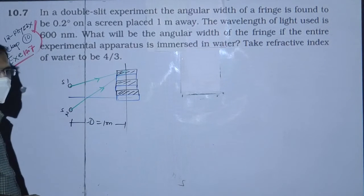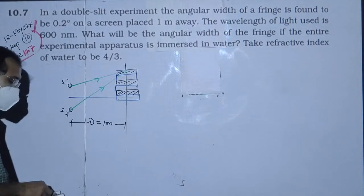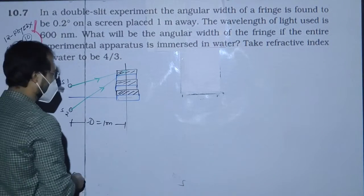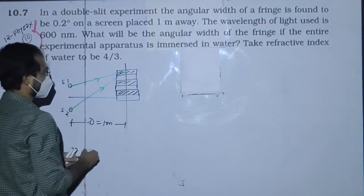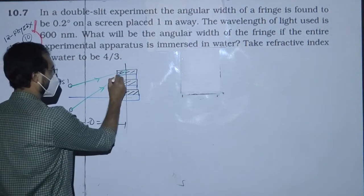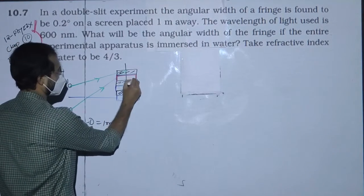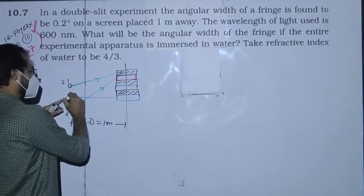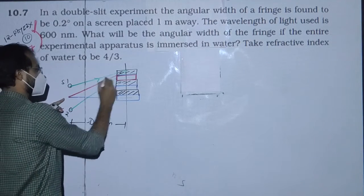If you look at the fringe, it has an angular width. The angular width is this angle — the angle subtended by one fringe at the slit.